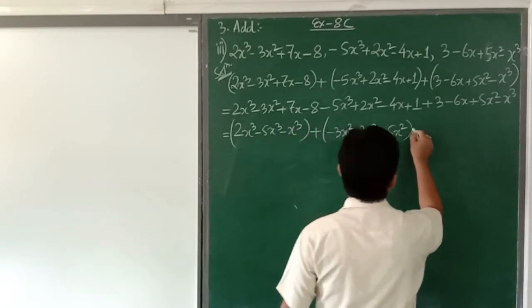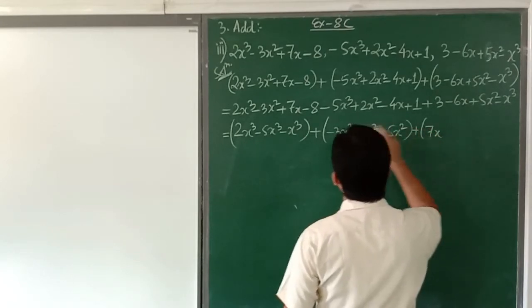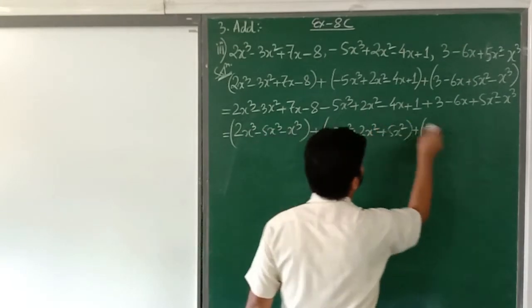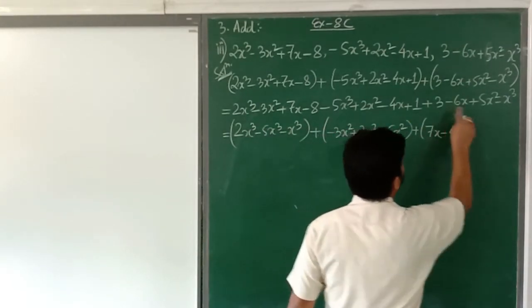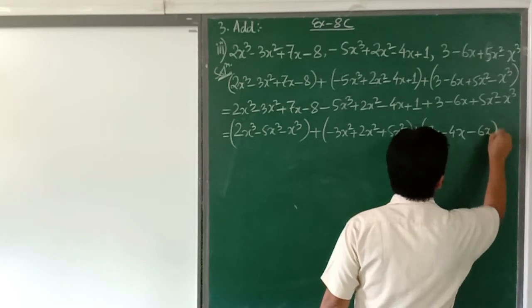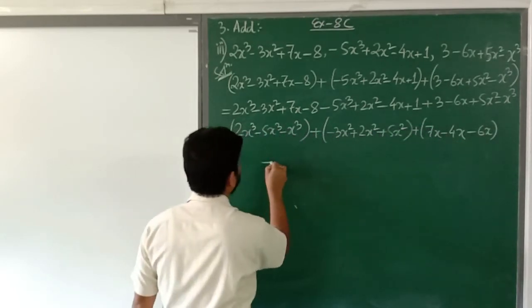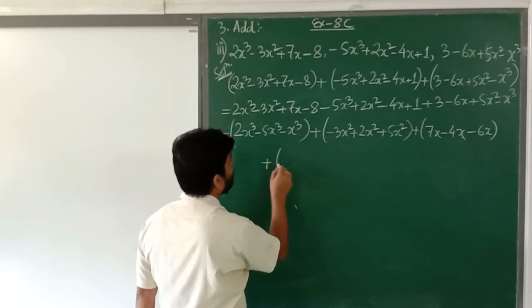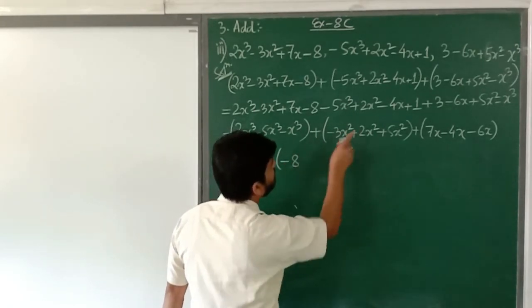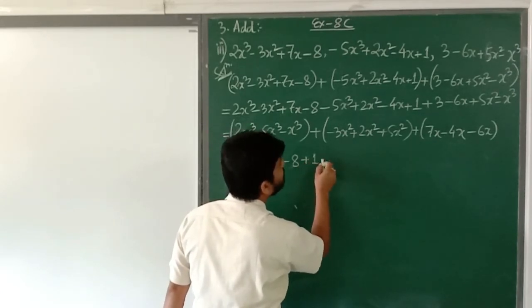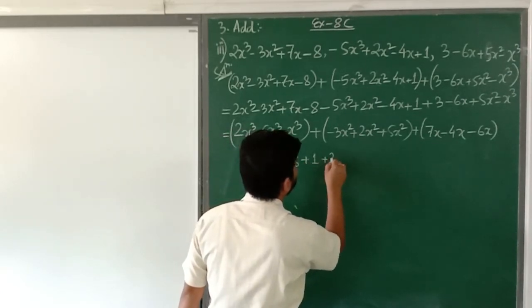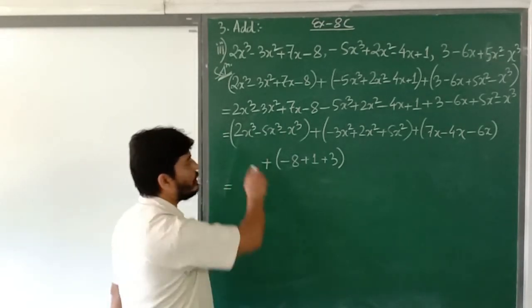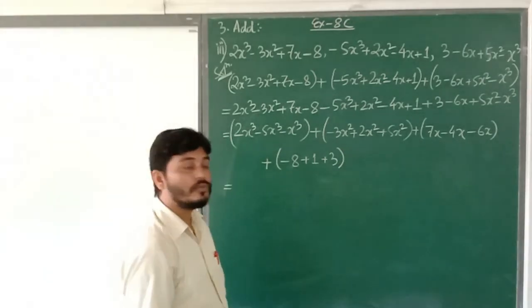Next for x: 7x, look for terms containing x — we get minus 4x and minus 6x. Then for the constant terms: minus 8, plus 1, and plus 3. I hope there's no doubt — we have grouped all the like terms together.